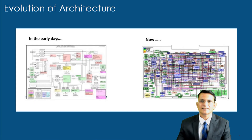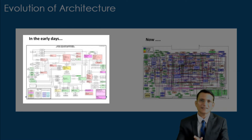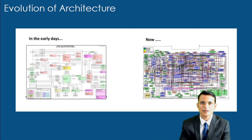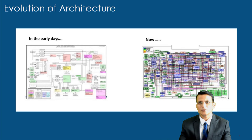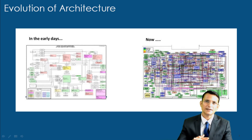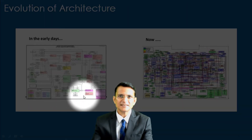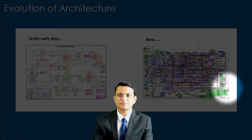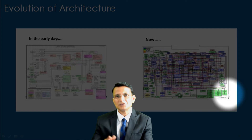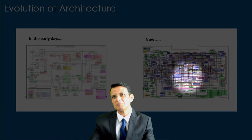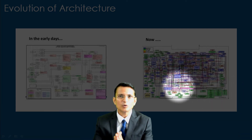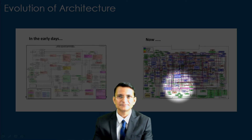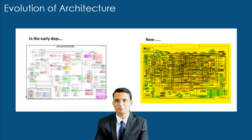In early days the architecture used to look much simpler. Now with the digital world, where you have IoT devices, blockchain, many legacy systems, integration systems, messaging systems, and infrastructure growing with Docker and Kubernetes — among many other things — the architecture is looking very complex. How will you handle this complex architecture?